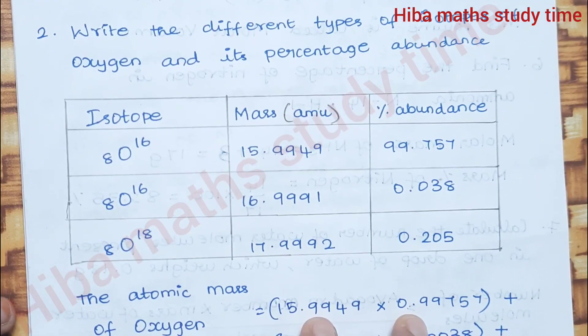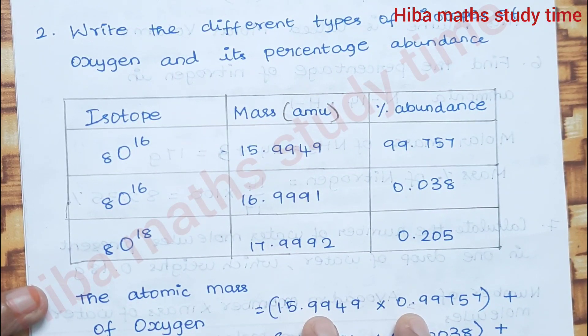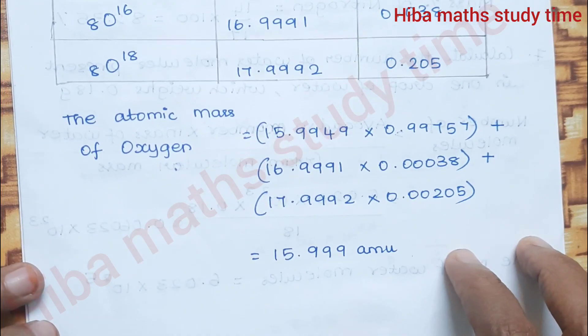Second question: Write the different types of isotopes of oxygen and their percentage abundance.